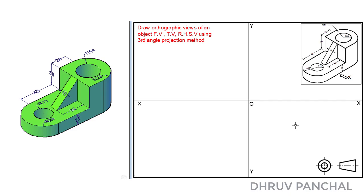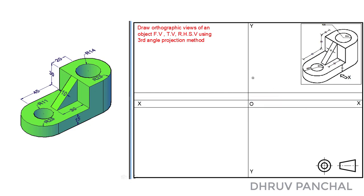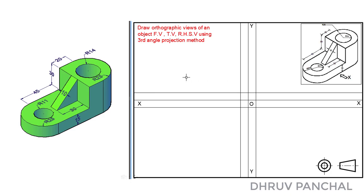With the help of a roller scale, draw a horizontal line parallel to line XX, above and below at a distance of 10 mm. Similarly, draw a vertical line parallel to line YY, ahead and behind at a distance of 10 mm, as shown. You can keep any distance as per your requirement. Now, mark the points in each quadrant as shown. These are the reference points for drawing a view in each quadrant.